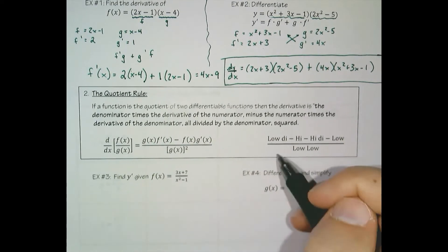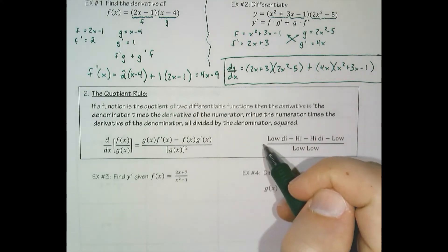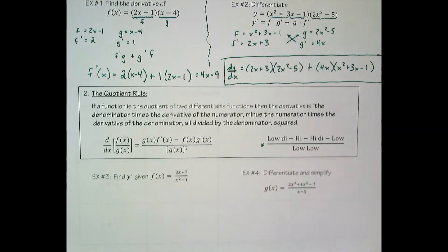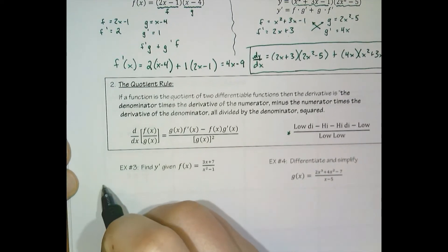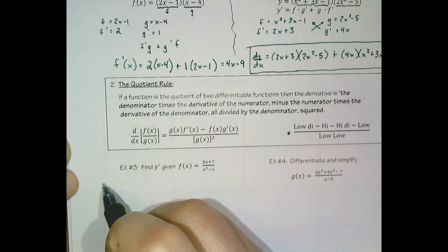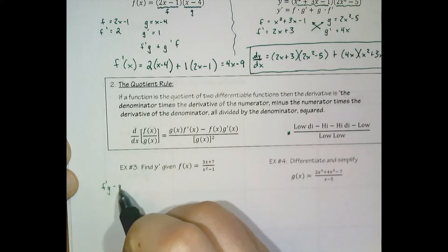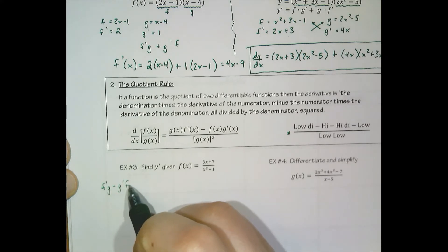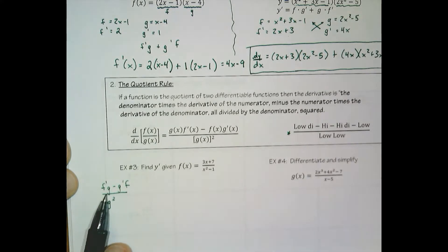I'm not a big fan of this mnemonic but I know that some people enjoy mnemonics so I have to throw that in there. I'll write my shorthand way of looking at the quotient rule: f prime g minus g prime f over g squared.